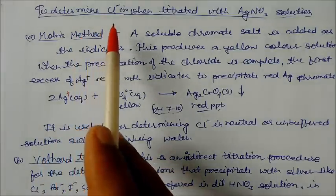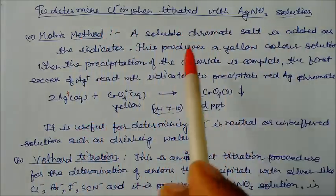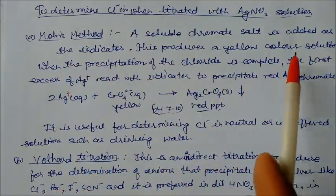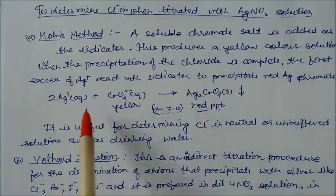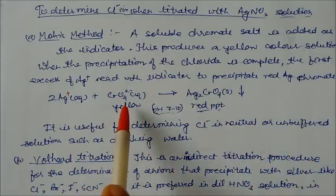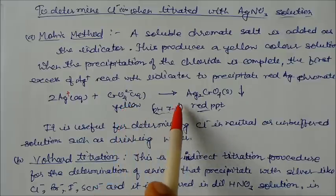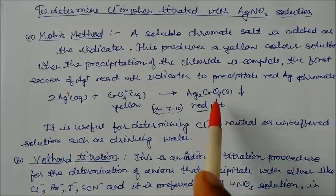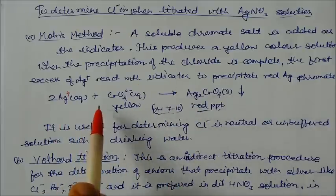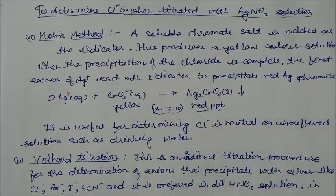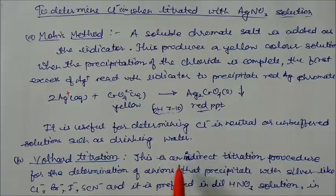In the Mohr method to determine Cl⁻ with silver nitrate, a soluble chromate salt is added as indicator, producing a yellow color. When the precipitation of chloride is complete, excess silver reacts with the chromate indicator to precipitate silver chromate. This is carried out at pH 7 to 10 (basic medium). This method is useful for determining chlorine in neutral or unbuffered solutions such as drinking water.